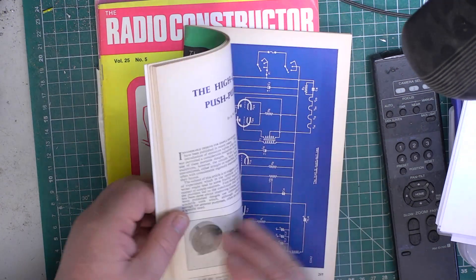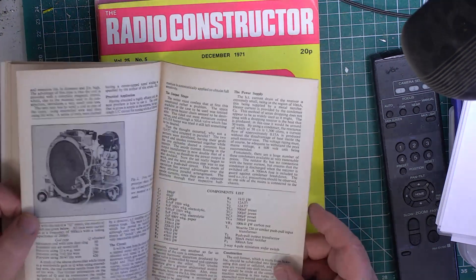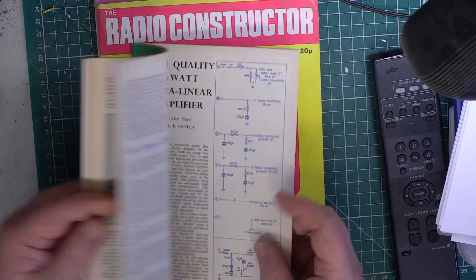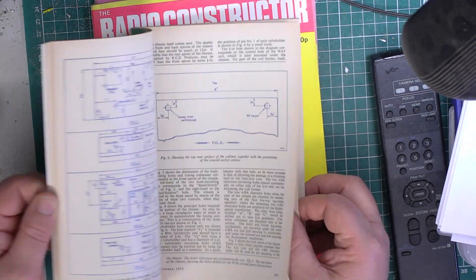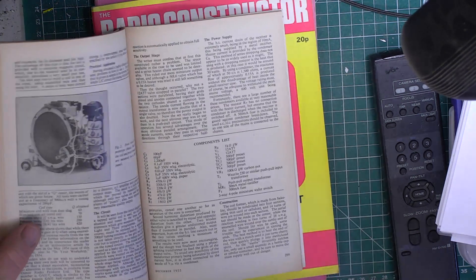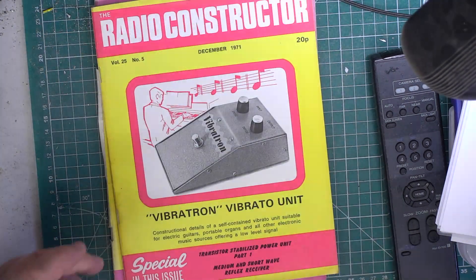They're interesting reading, and some of the stuff is relevant. The earlier magazines, there's no details of how to actually make the thing. They give you the circuit diagram and you're expected to have enough knowledge to work out your own layout. I don't know what date they changed that policy, but that's how it started.